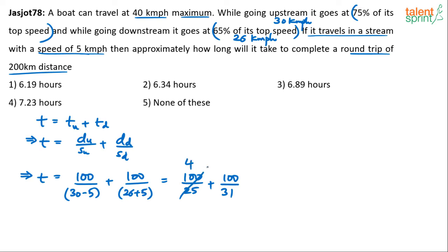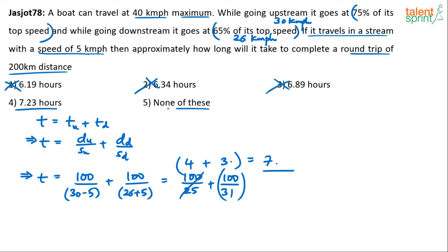So this is 4 plus something. What is 100 by 31? 100 by 31 is 3 point something. So the overall answer should be 7 point something. Options 1, 2, and 3 — which are 6.19, 6.34, and 6.89 — are definitely wrong because the answer should be more than 7. So it's either 7.23 or the 5th option, none of these.